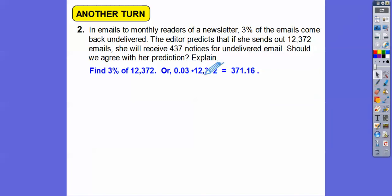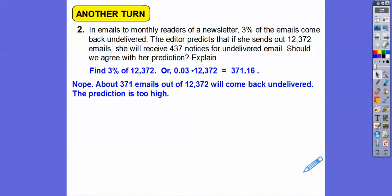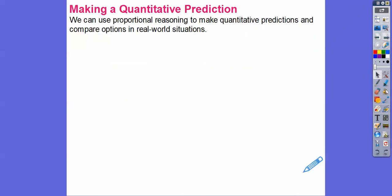So are these numbers close? Is 437 close to 371? Should we agree with her prediction? I'm going to definitely say no. Because about 371 emails out of those will come back undelivered. So the prediction that they're doing is much higher than what should be expected. So I don't think that's as accurate.